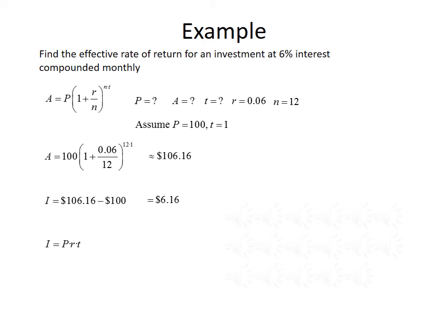Finally, we'll use the simple interest formula I equals PRT with the information given to figure out the effective rate. I was 6.16, P we said was 100, we're looking for R, and T was 1. To solve for R, we divide by 100, which gives us 0.0616. Transforming that decimal to a percentage, the effective rate of return is equal to 6.16%.